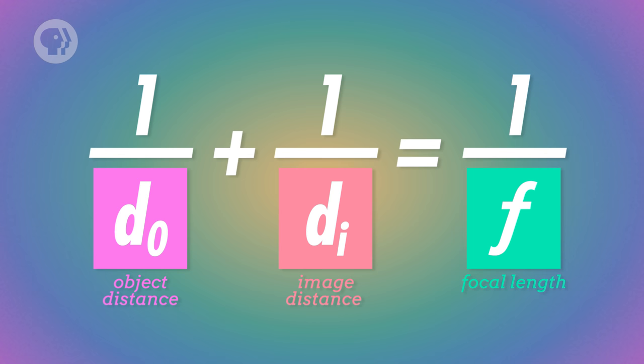And the image is formed by light rays that actually originated from the object, so a real image is formed. The distance between the image and the lens is the image distance, and it's related to the object distance and the focal length by a very important equation.